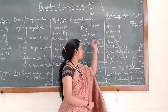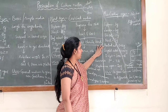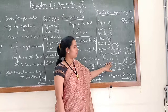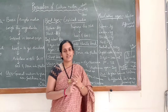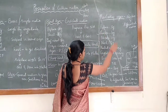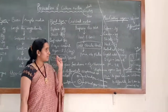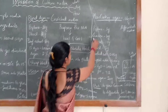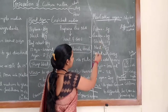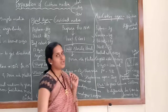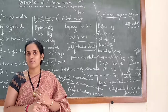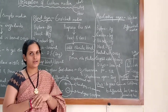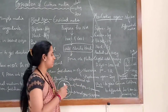The composition of MacConkey agar includes peptone, lactose, bile salts, NaCl, neutral red, crystal violet, distilled water, and agar, maintained at pH 7.2. Peptone acts as a source of nitrogen. Lactose is added to differentiate lactose and non-lactose fermenting bacteria. Bile salts and crystal violet inhibit unwanted gram-positive bacteria, not allowing them to grow on the surface of MacConkey agar.